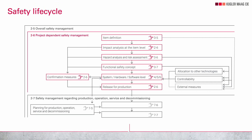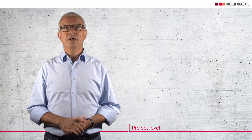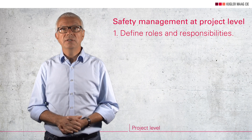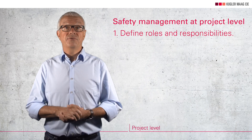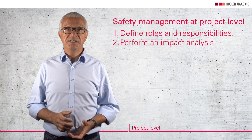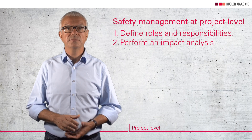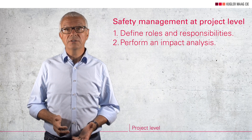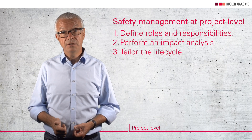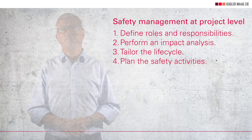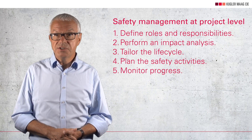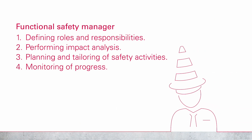Point number three is about what functional safety management includes at the project level. The various activities must be carried out by people, which requires roles to be defined and people to be assigned. In particular, it must be clear who is responsible for the functional safety of the product. An impact analysis shows what needs to be done in the course of product development, because in the rarest of cases a company starts development from scratch — there is usually a previous version of the product. The result of the impact analysis is used to tailor the lifecycle and to plan the necessary safety activities. Functional safety management also includes continual monitoring of progress against the plan and, if necessary, revising the plan. All of these are the tasks of a so-called safety manager.